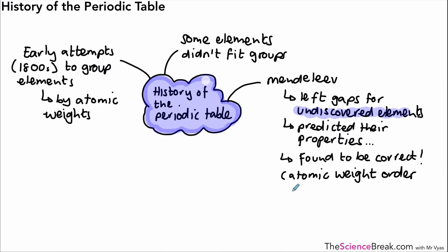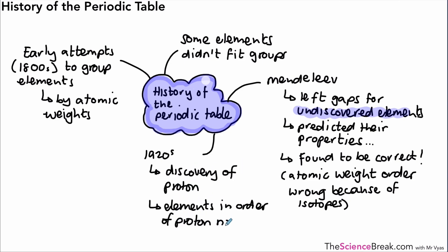The atomic weight order at that time wasn't always necessarily right because we hadn't actually discovered or weren't aware of the isotopes. Then in the 1920s we had the discovery of the proton and now elements are placed in order of proton number in the periodic table.